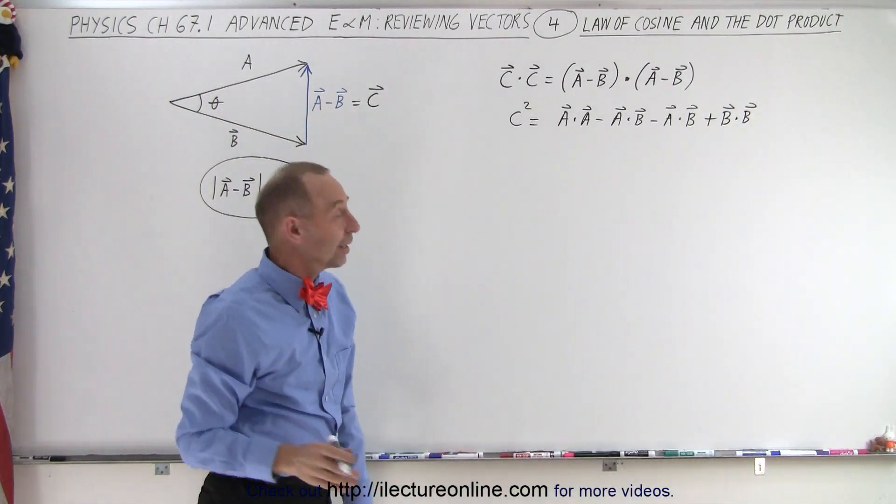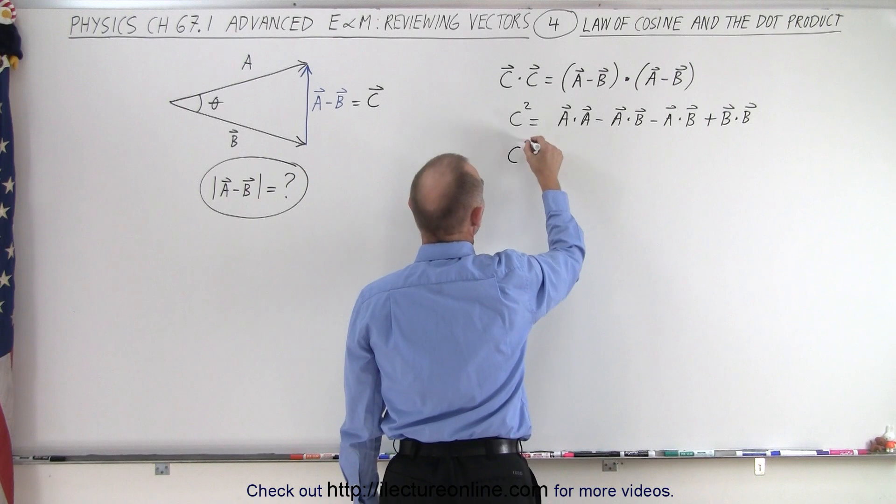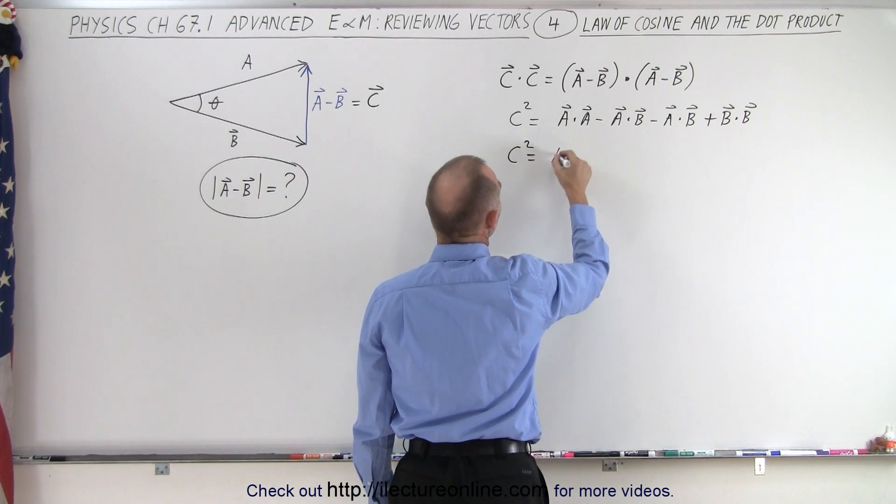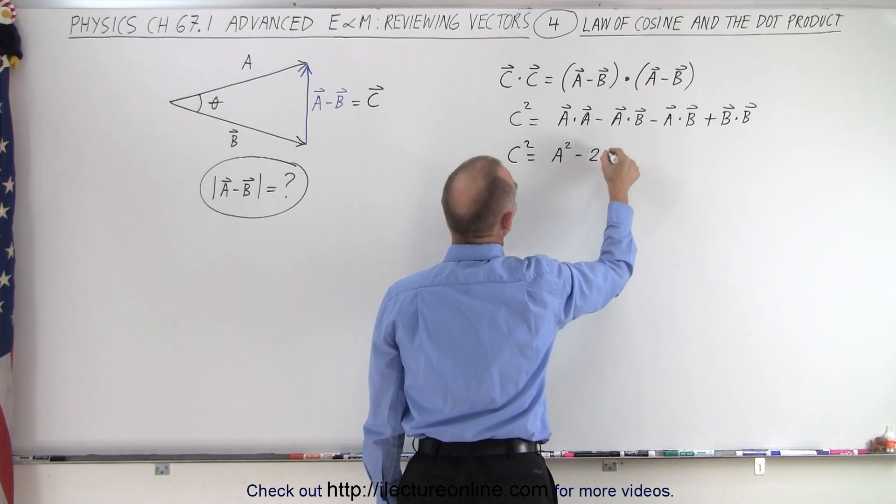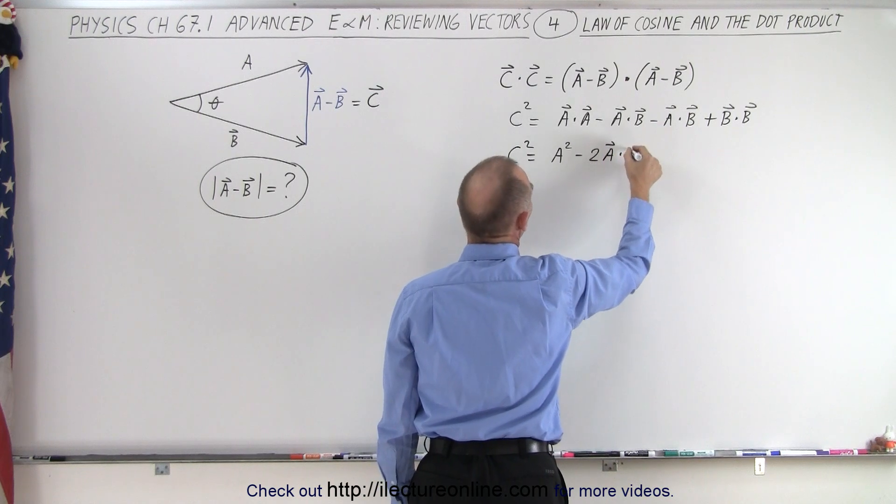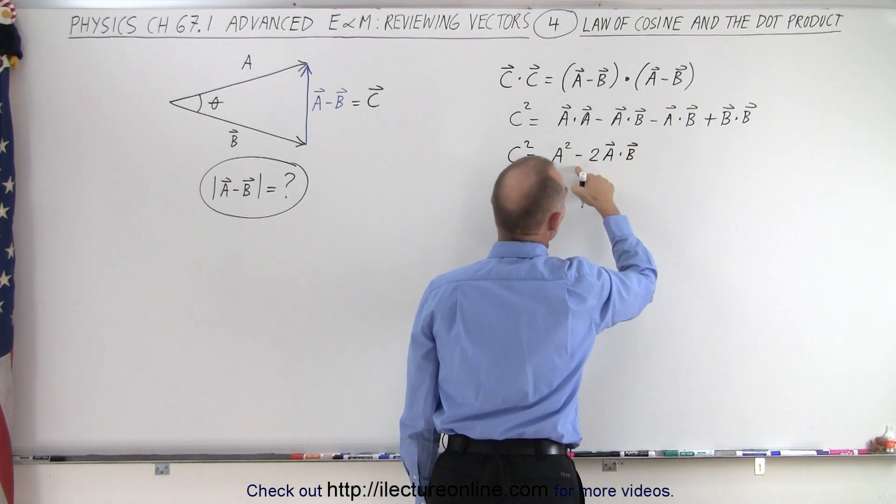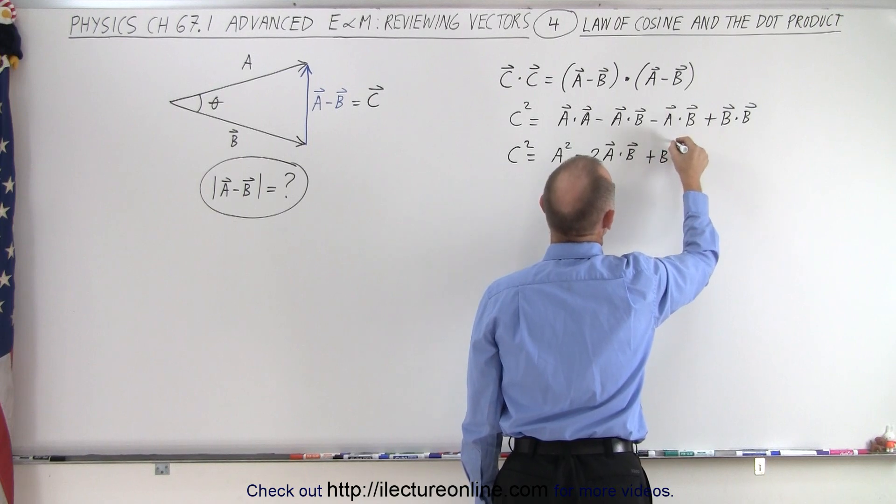All right, simplifying that a little bit more, I end up with c squared is equal to a dot a is simply a squared minus 2 a dot b, because there's two of those, and it's minus, and then plus b squared.